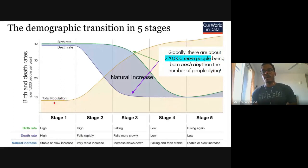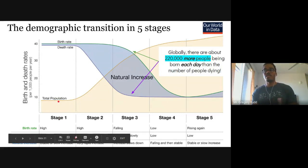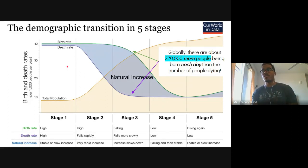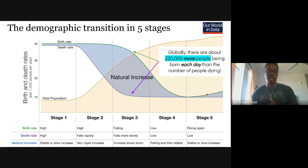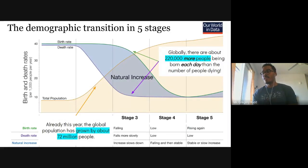Eventually both birth rate and death rate are low — that's a stage four country. A stage one might be Rwanda, with high birth and death rates as a result of civil war. Stage two might be Vietnam — slowly industrializing. Stage three, where birth rate starts to fall, is China. Stage four is the United States. Stage five might be Italy, where people are having only one child, which doesn't replace both parents, so the population starts to decline.